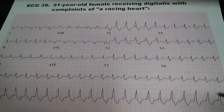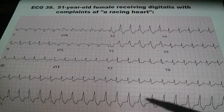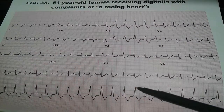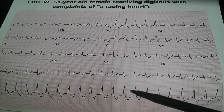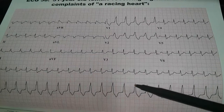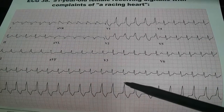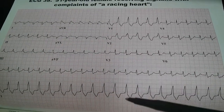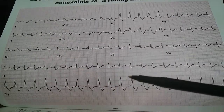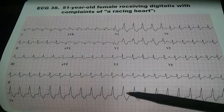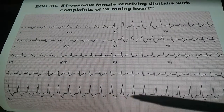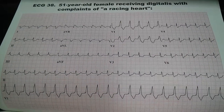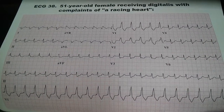Looking at the ECG, we see that the rate is tachycardic. It is close to 150, and we see wide QRS complexes, or a wide complex tachycardia.